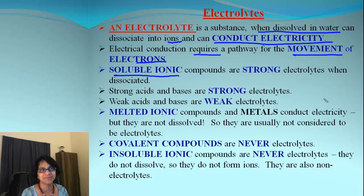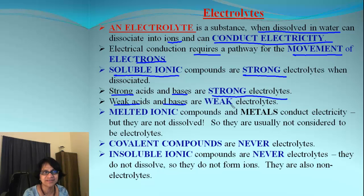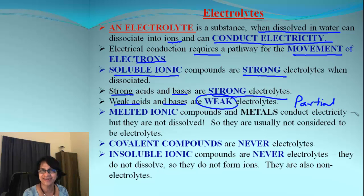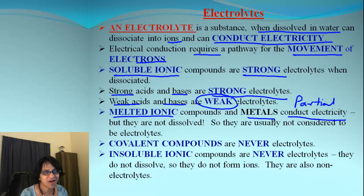Which compounds are electrolytes? Soluble ionic compounds are always strong electrolytes because they dissociate completely. Strong acids or bases also ionize completely, so they are strong electrolytes. Weak acids or weak bases are weak electrolytes because they have only partial dissociation. Molten ionic compounds and metals can conduct electricity but we don't usually call them electrolytes, since metals don't form ions.